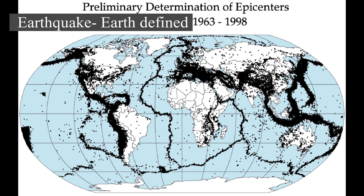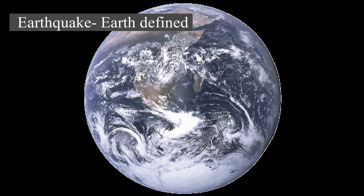Earthquakes are caused mostly by rupture of geological faults, but also by other events such as volcanic activity, landslides, mine blasts, and nuclear tests. An earthquake's point of initial rupture is called its hypocenter or focus. The epicenter is the point at ground level directly above the hypocenter.